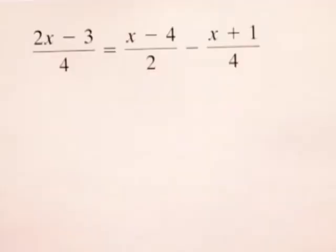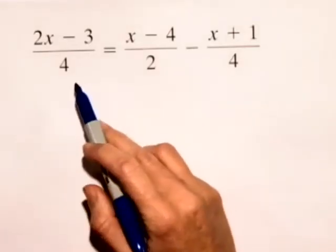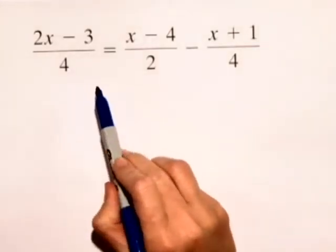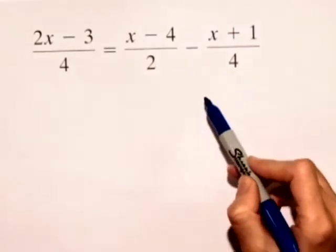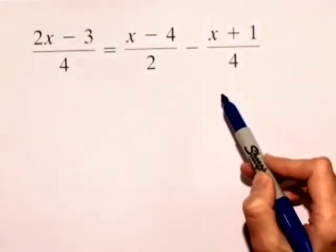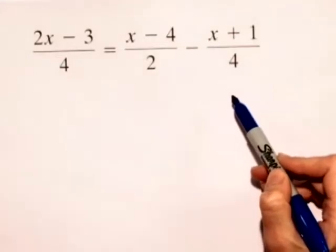For this problem, we'll solve a rational equation. Now we have a rational equation that has denominators of 4, 2, and 4. And what we would like to do is clear these fractions so that we have an equation that does not involve fractions.